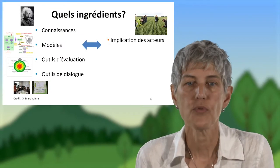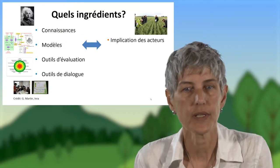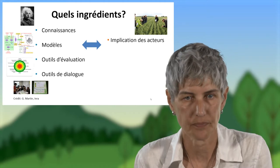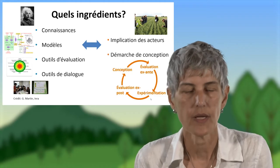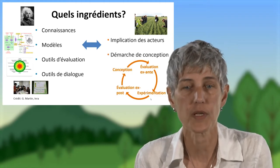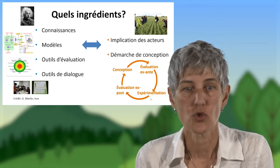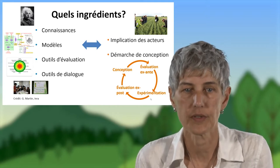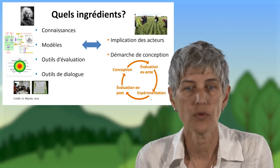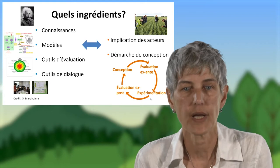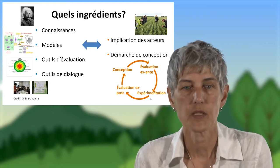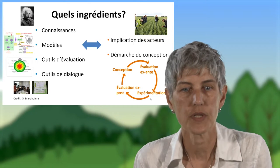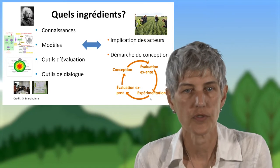Concevoir à plusieurs, ça veut dire impliquer les acteurs qui vont mettre en œuvre concrètement les systèmes agricoles durables. Et ça veut dire aussi suivre une démarche de conception selon une boucle de progrès, avec différentes étapes représentées ici : étape de conception, d'évaluation ex ante avant le terrain, d'expérimentation et d'observation sur le terrain, et d'évaluation ex post.